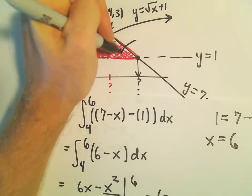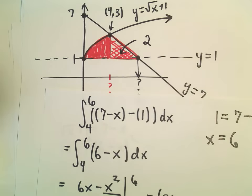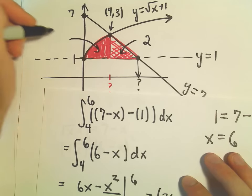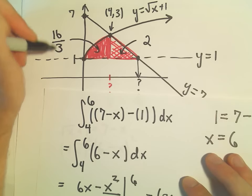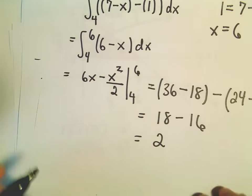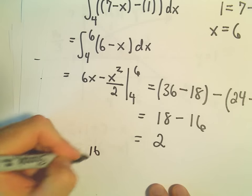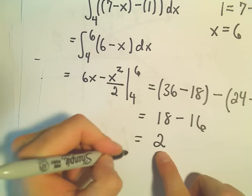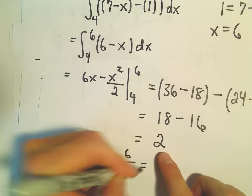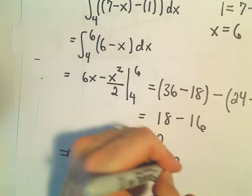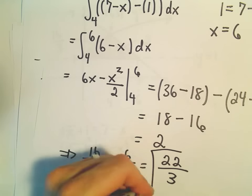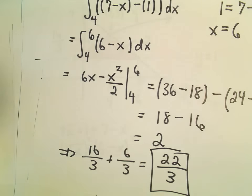So this other part, the right side has an area of 2. We said the left part had an area of 16 over 3. So now we can just add those together. So 16 thirds plus 2 over 1, which would be 6 thirds. We can say the area in total would have value 22 over 3.